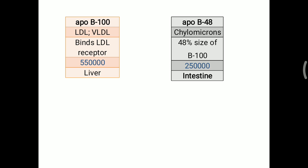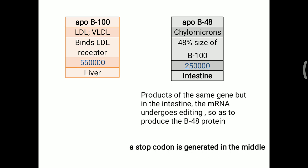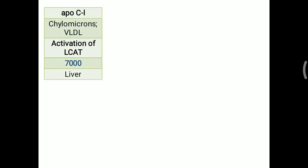Apo B48 is found on chylomicrons. It is the same type of molecule as Apo B100 but is only 48% of its size, with a molecular weight of 250,000 daltons — less than 50% of Apo B100. Apo B48 is produced only by the intestine. Both Apo B100 and B48 are produced from the same gene, but the mRNA undergoes editing that generates a stop codon in the middle of the mRNA, reducing the size to 48% of B100.